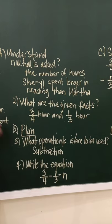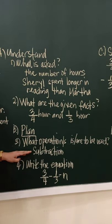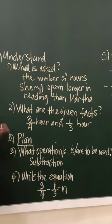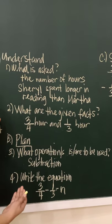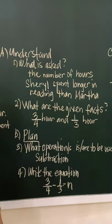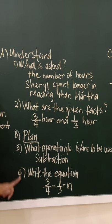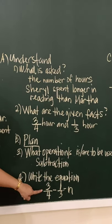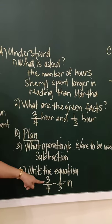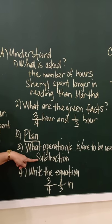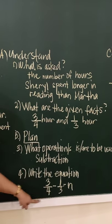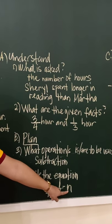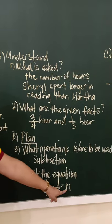So in our first problem, we are going to use subtraction. Remember, once you're asked how much longer, that is subtraction. If you have now the operation, you are now ready to write the equation. The equation, you get from the given, three-fourth and one-third with the operation. So subtraction minus equals N. The N here represents our answer.